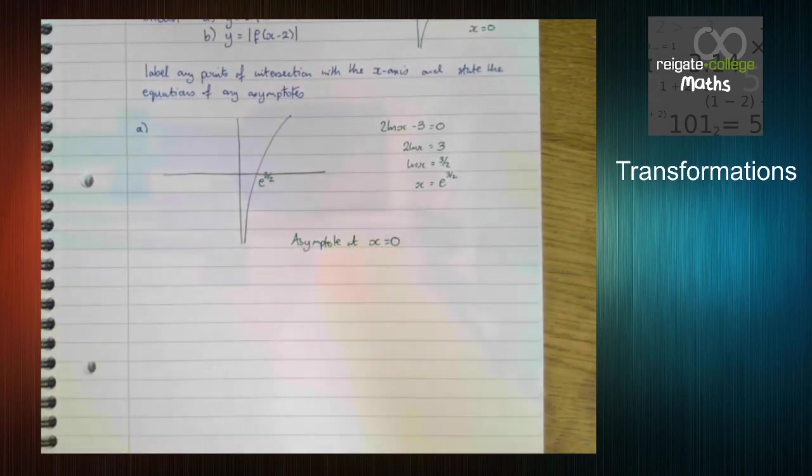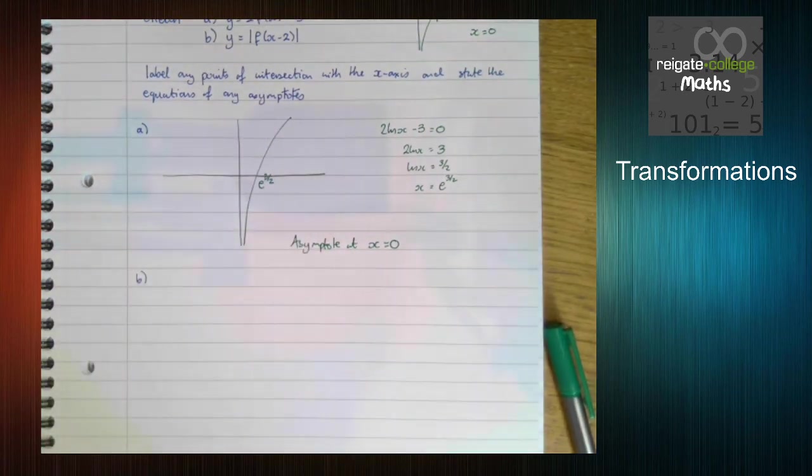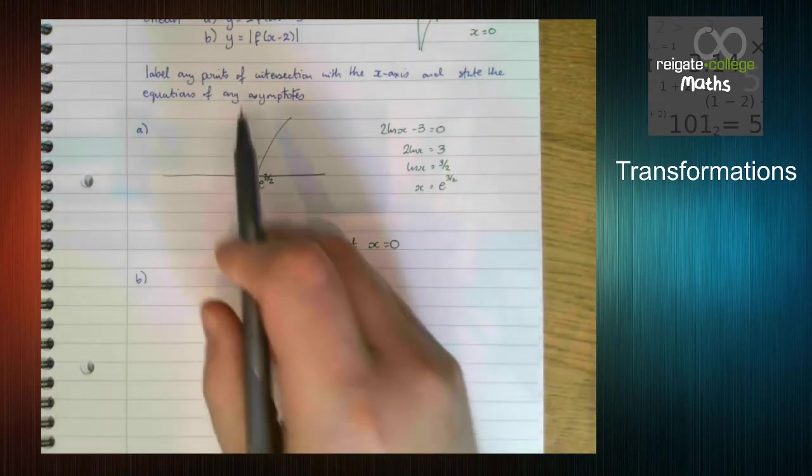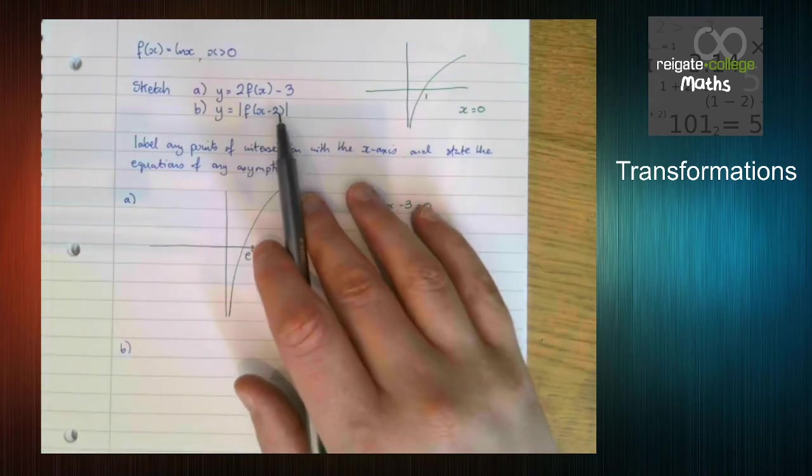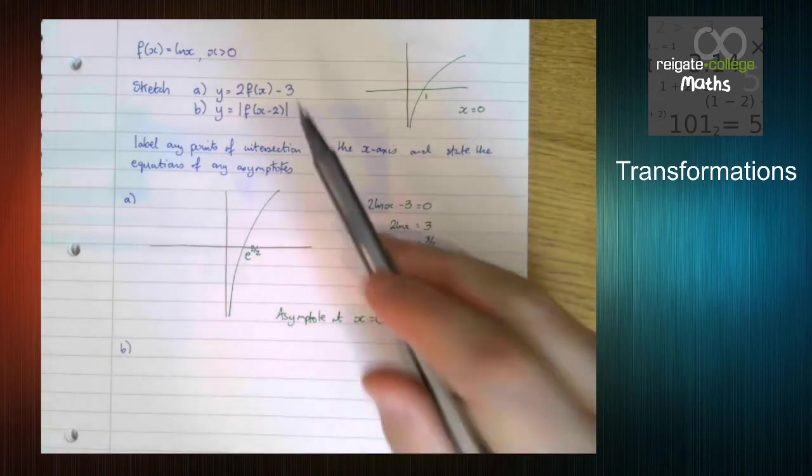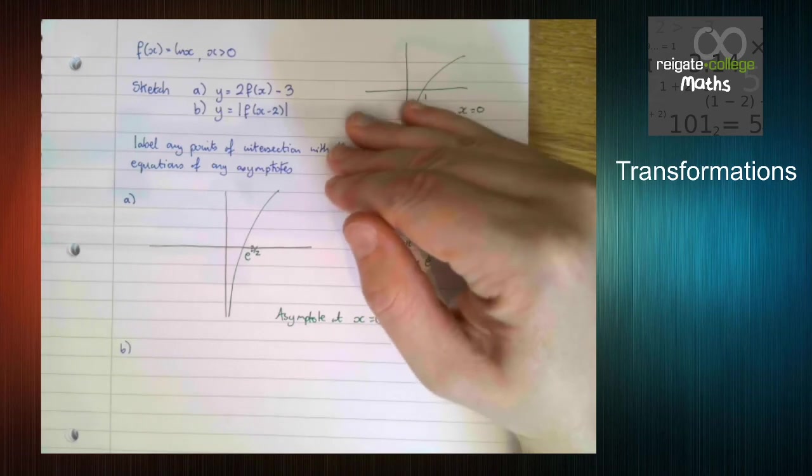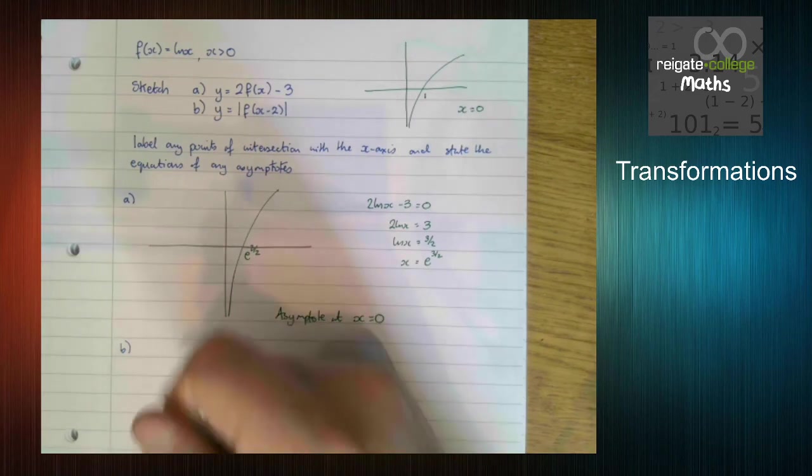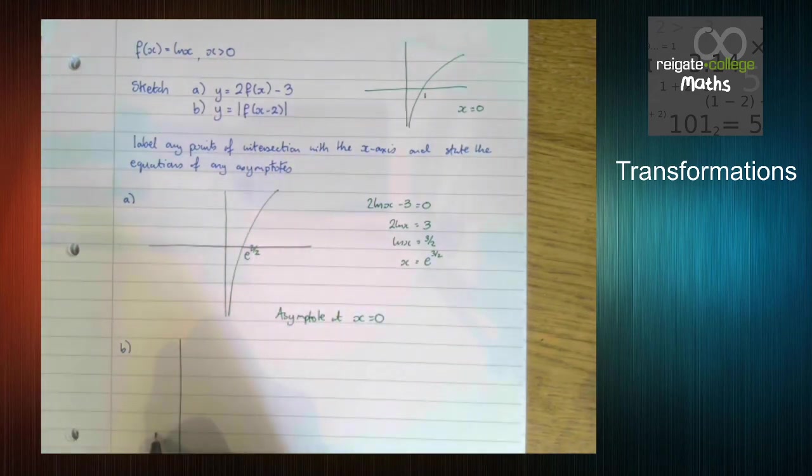Now part b, this one, it's much easier to think about it in terms of the transformations. As soon as you put a modulus in there, life becomes a little bit more difficult. So what's going to happen here is the modulus is in the y direction, so the order doesn't hugely matter. So what we're going to do is we're going to take the bottom, everything underneath, up, and then we're going to shift it that way, 2.